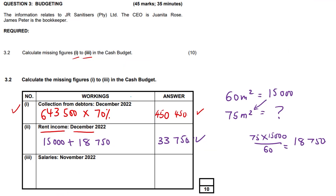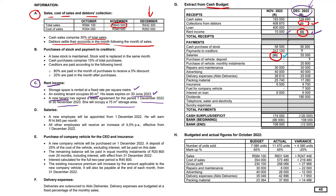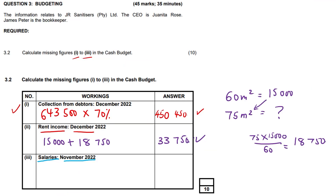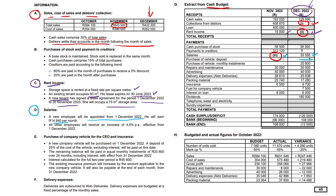Question three asks us to work out the salaries for November. That's a bit odd because we've been doing December calculations. The December salary is 55,595, and we need to work out November's. Item D only: a new employee will be appointed from 1st December 2022, earning 14,840 per month. That new employee is included in the 55,595. So we take 55,595 and subtract 14,840, arriving at 40,755. Our November salary would have been that 40,000 odd.